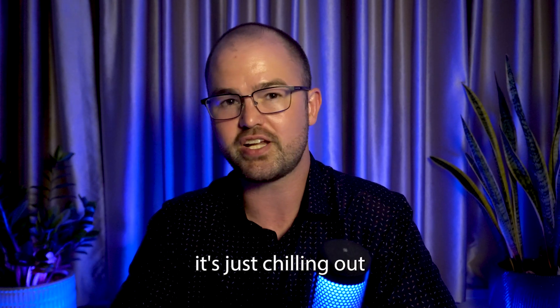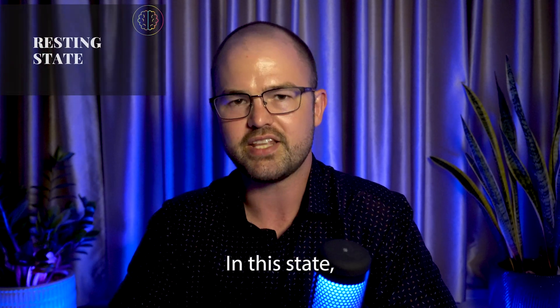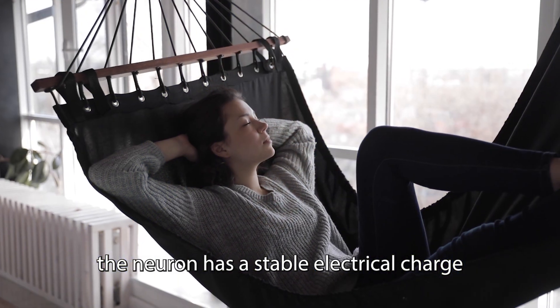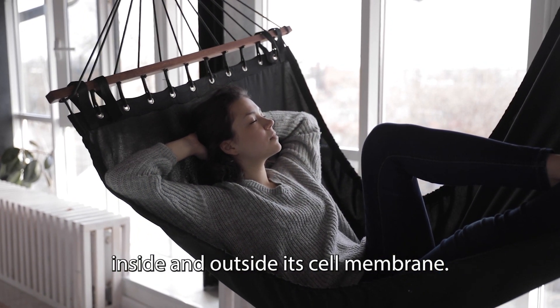When a neuron isn't firing, it's just chilling out in what we call a resting state. In this state, the neuron has a stable electrical charge inside and outside its cell membrane.